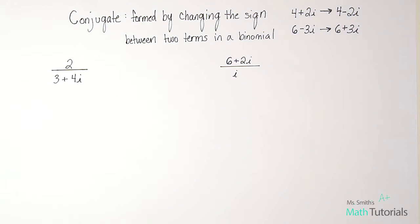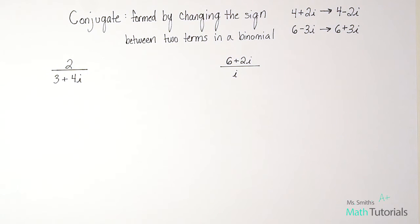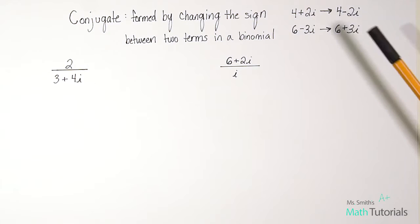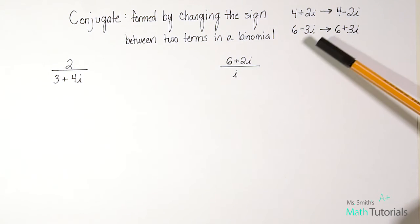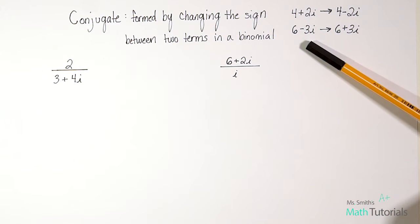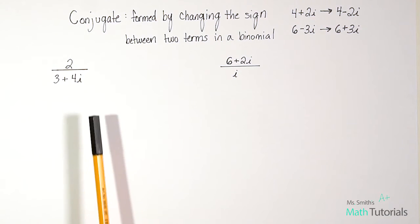Now we're going to look at some division examples for operations with complex numbers. When we're dividing — and remember, a fraction bar means division — if we've got an imaginary number in our denominator, we have to do something called finding the conjugate. A conjugate is formed by changing the sign between two terms in a binomial. For example, the conjugate of 4 plus 2i is 4 minus 2i, and the conjugate of 6 minus 3i is 6 plus 3i. Our goal is to use the conjugate to get rid of the i in the denominator.